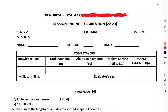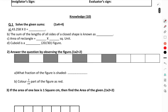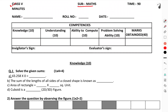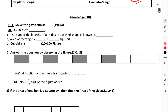We have to discuss the session examination for subject Maths, Class 5th. This is a Kendriya Vidyalaya question paper. First of all, you have to see: Understanding 10 marks, Knowledge 10 marks, Ability to Compute 10 marks, Problem Solving 10 marks — total 40 marks. Let's start with the Knowledge section.